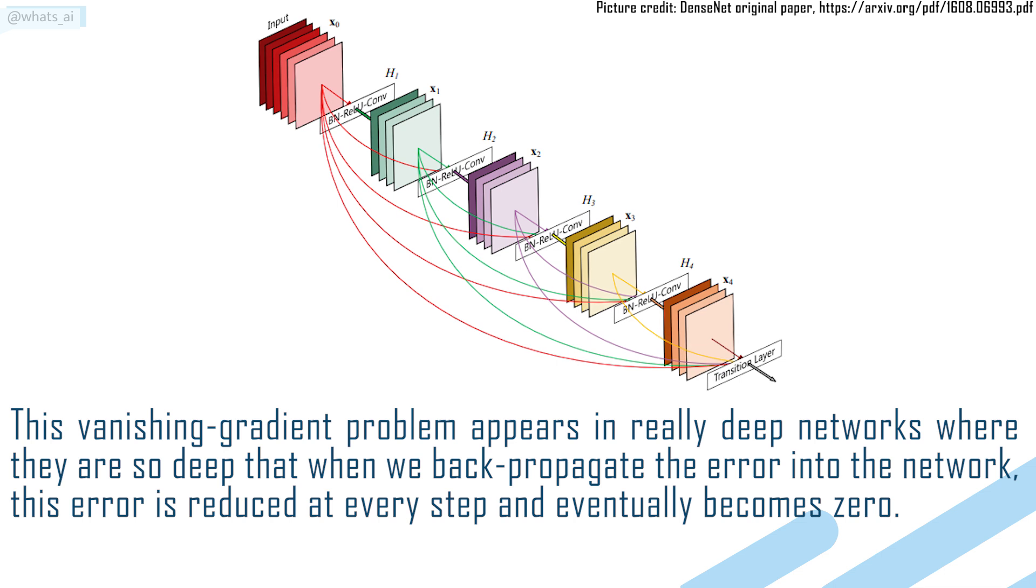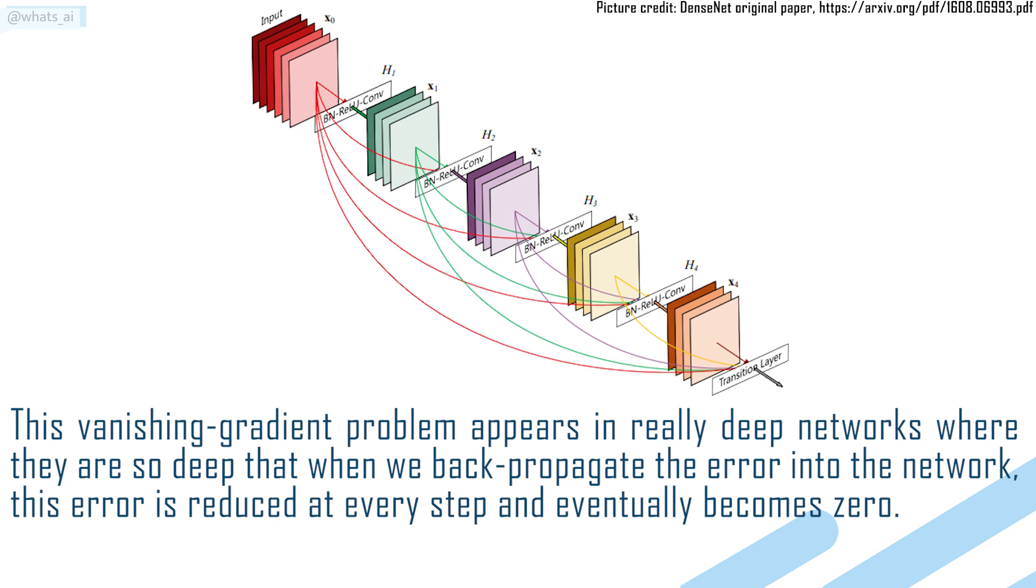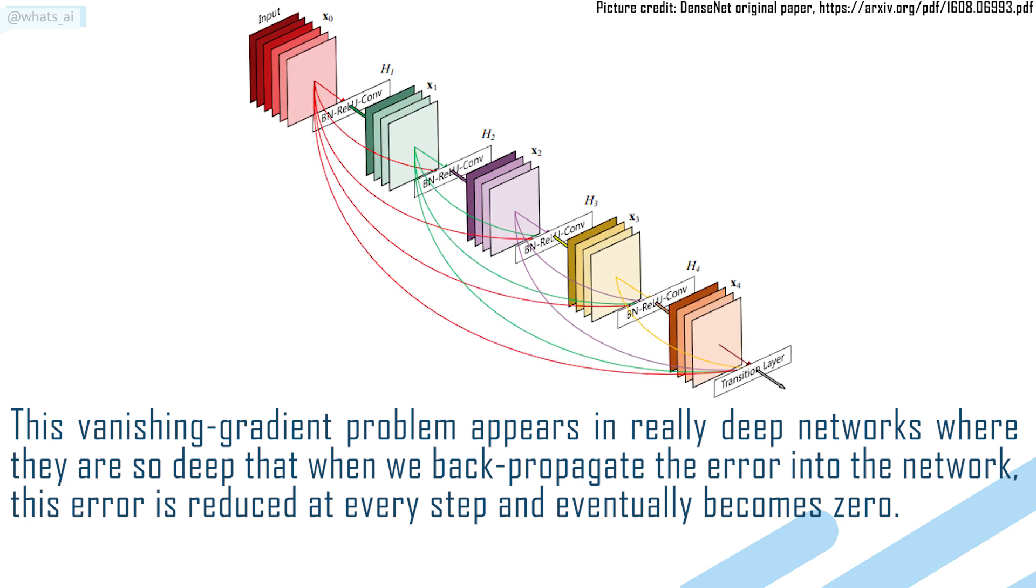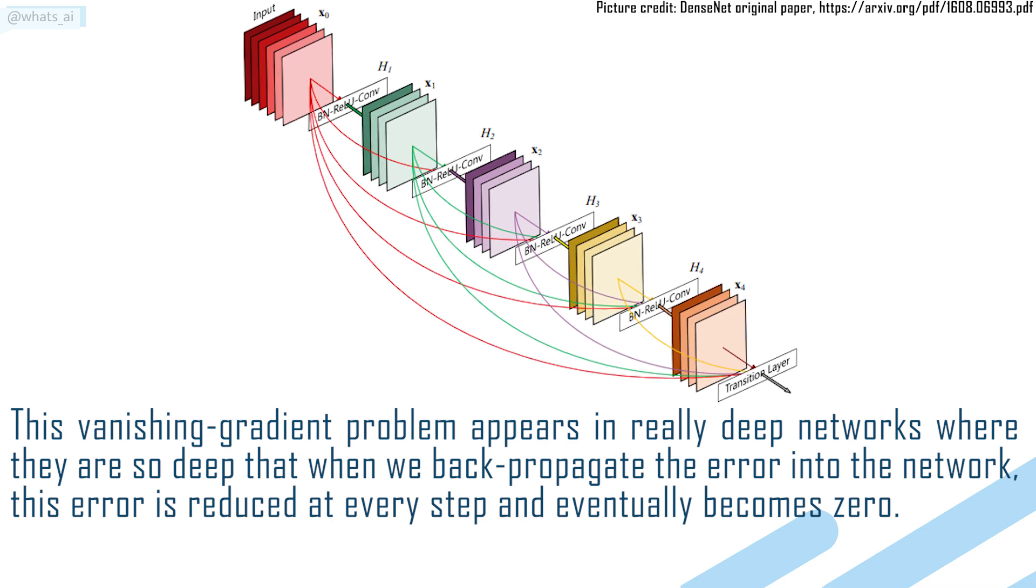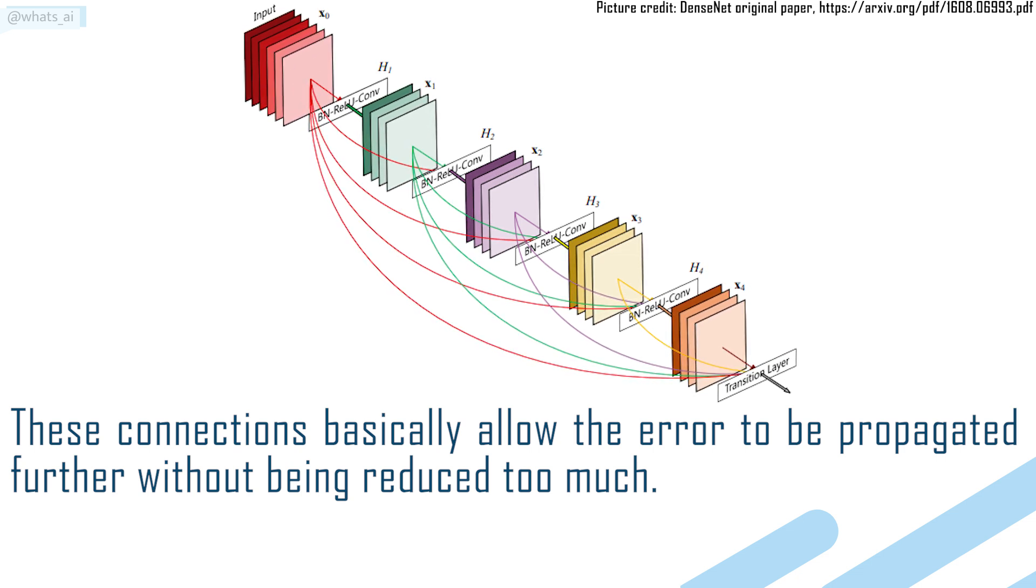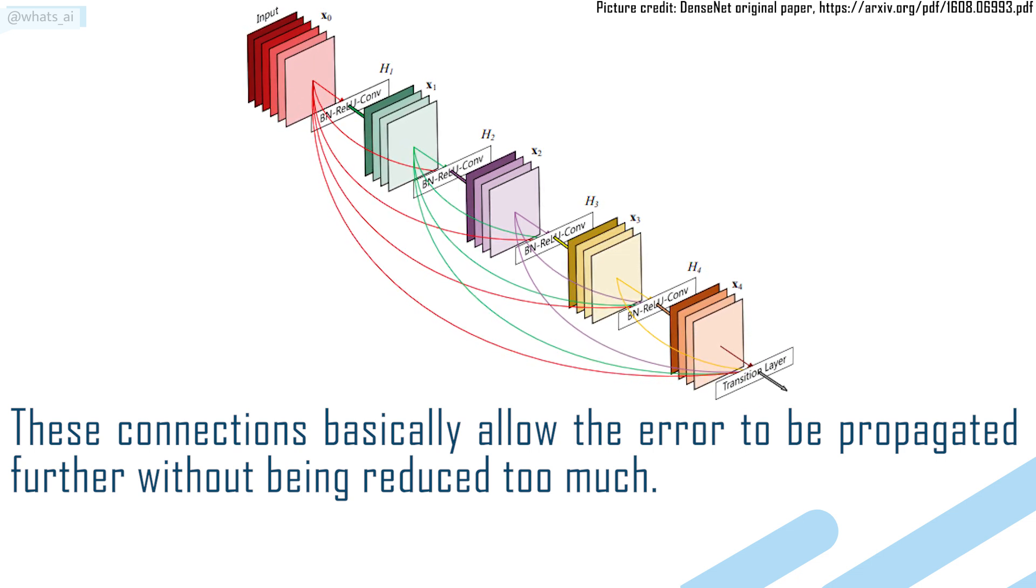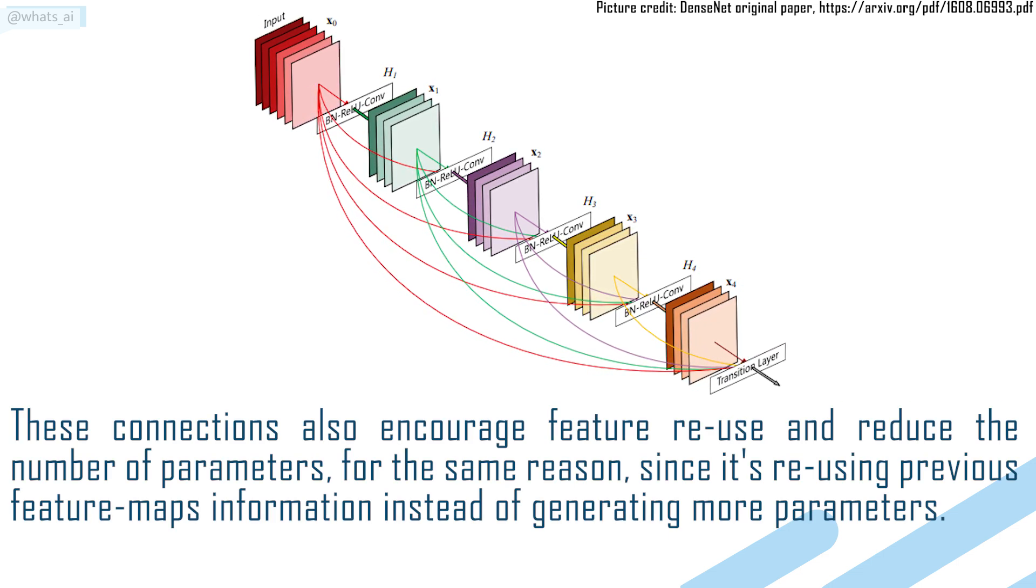This vanishing gradient problem appears in really deep networks, where they are so deep that when we backpropagate the error into the network, this error is reduced at every step and eventually becomes zero. These connections basically allow the error to be propagated further without being reduced too much. These connections also encourage feature reuse and reduce the number of parameters.